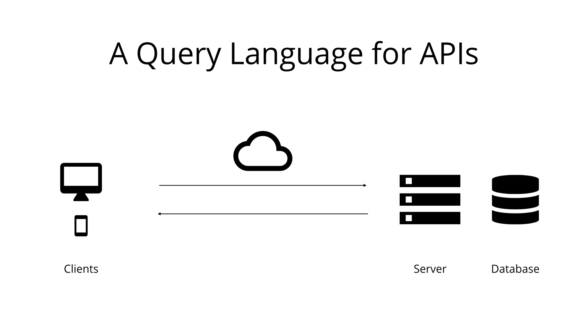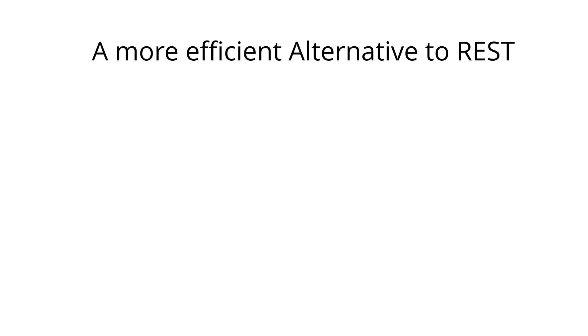Before we dive deeper into the technical details in the next chapter, let's understand a bit of the historic context in which the concept of REST was developed. REST has been a popular way to expose data from a server. When the concept of REST APIs was developed, client applications were relatively simple and the development speed wasn't nearly where it is today. REST thus was a good fit for many applications.